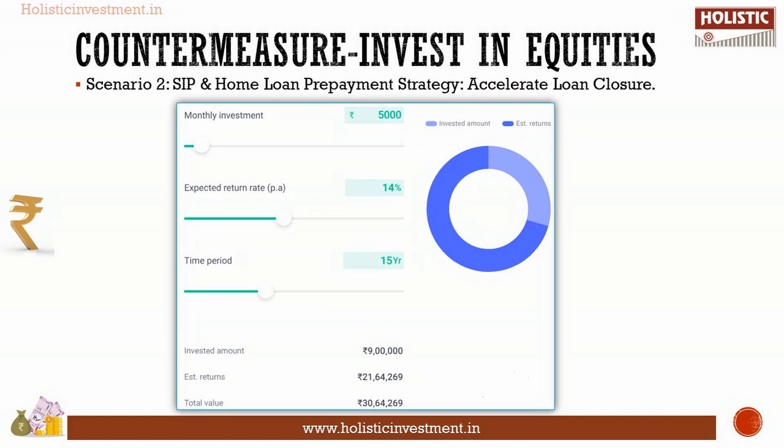Scenario two: SIP and home loan prepayment strategy — accelerate loan closure. In this strategy, the SIP helps you in closing out the loan much earlier than anticipated. For the above-mentioned loan of Rs. 50 lakhs, you start a SIP of Rs. 5,000 per month as you have some additional money to spare. You start this SIP in an index fund along with your EMI, so the SIP grows slowly as the loan also starts to reduce courtesy of your continuous repayment.